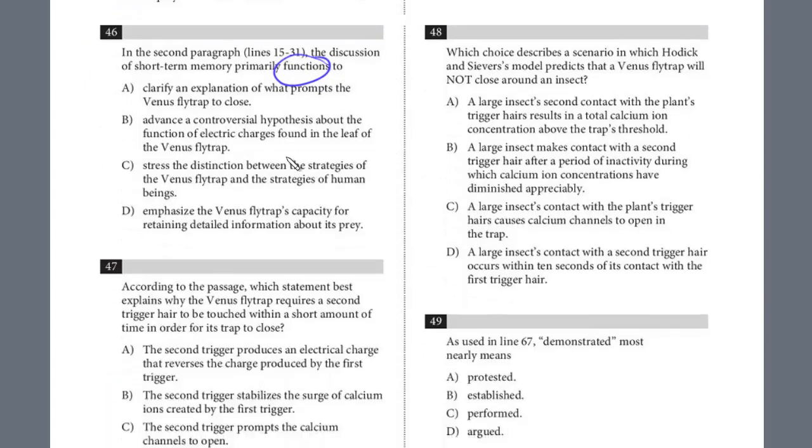What's the function of this? Clarify an explanation of what prompts the Venus flytrap to close. This looks good. Remember, we had an analogy. We had an explanation. It gives more detail. It explains what exactly prompts it to close. Remember, there are two triggers within 20 seconds, and it explains it. If you look at the other choices, it's certainly not a controversial hypothesis. We don't have any information based on that. Stress the distinction between the strategies of the Venus flytrap and the strategies of human beings. Even though there was an analogy, there was nothing about the distinction. This is just off point. Emphasize the Venus flytrap's capacity for retaining detailed information about its prey. Does it emphasize the capacity? No. It just gives an explanation, and that's part of the analogy and also the explanation with the ant. So the answer is A.